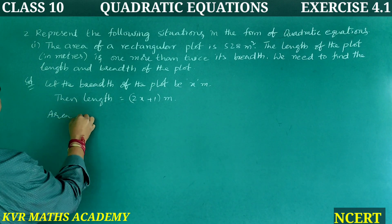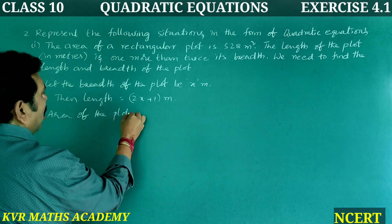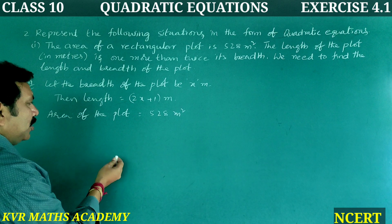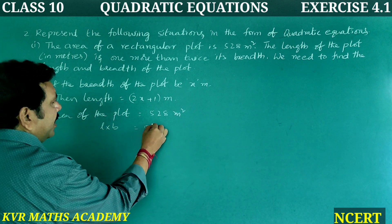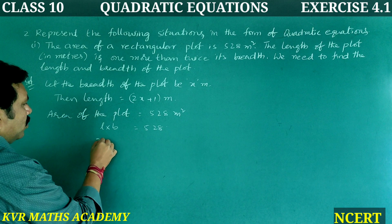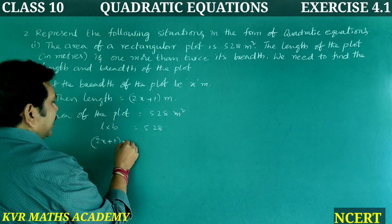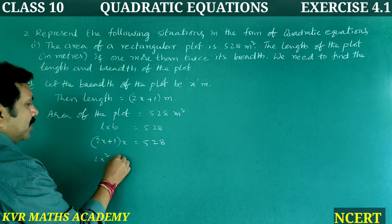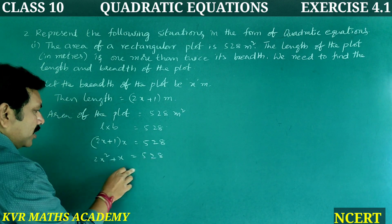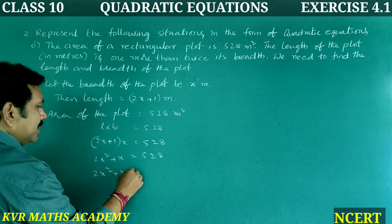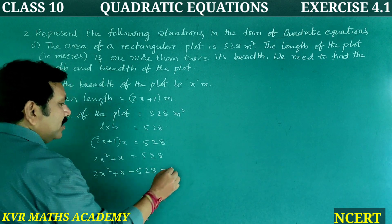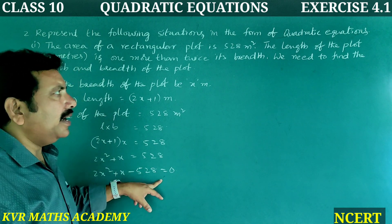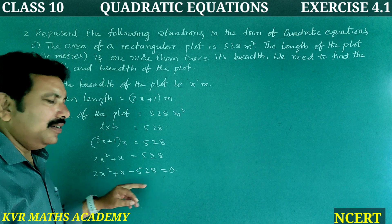The area of the plot is 528 square metres. The formula for area of a rectangle is Length × Breadth. So L × B = 528. That means (2X + 1) × X = 528, which gives 2X² + X = 528. Transferring to this side: 2X² + X − 528 = 0. Hence this is the required quadratic equation to find the length and breadth of the plot.